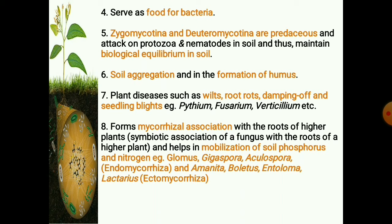Some soil fungi are parasitic and cause a number of plant diseases such as wilts, root rots, damping off, and seedling blight — example: Pythium, Fusarium, Verticillium. A number of soil fungi form mycorrhizal associations with the roots of higher plants and help in mobilization of soil phosphorus and nitrogen — example: Glomus, Gigaspora, Acaulospora, Amanita, Boletus, Entoloma, and Lactarius.